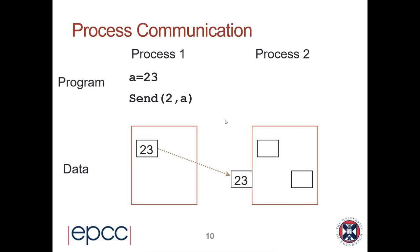Sending an email to somebody does not transfer the data unless my collaborator reads the email. The equivalent in message passing is that every send has to have a receive. Sending a message is a two-sided process: the sending process has to actively call a send, and the receiving process has to actively call a receive. So Process 2 says 'I want to receive some data from Process 1 and put it into variable B,' and once the receive is issued, variable B on Process 2 is set to 23.